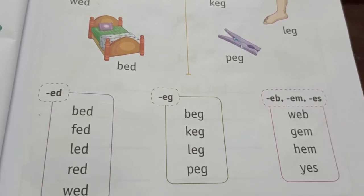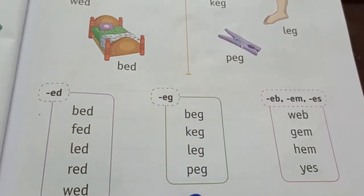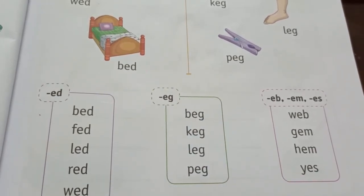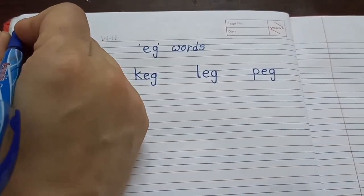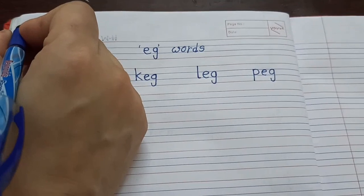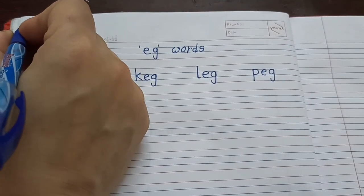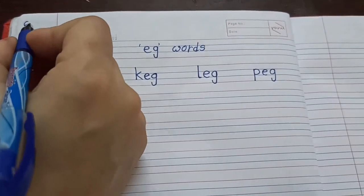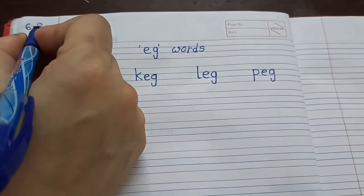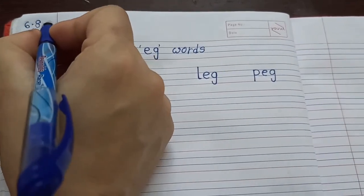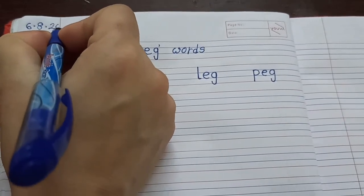So children, now we will write all these words in our notebook. So get ready with your notebook and pencil. Are you ready? First we will write the date here. Today's date is 6.8.2020.